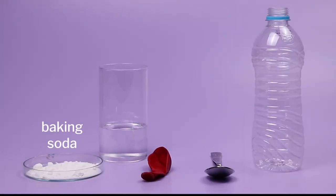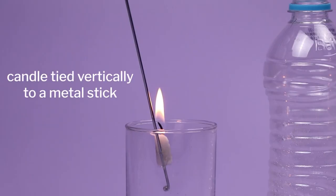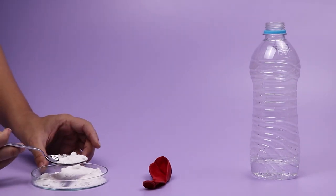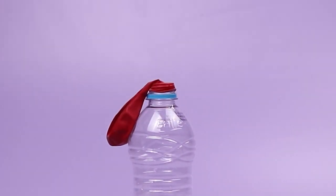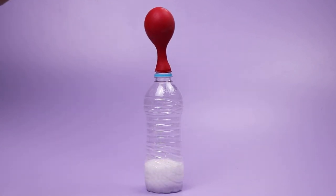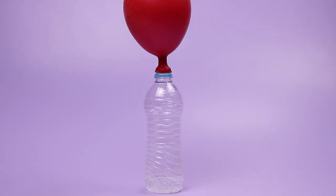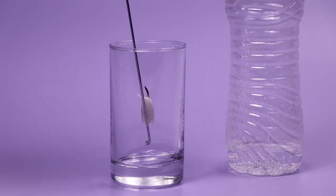For this demonstration, we will need baking soda, vinegar, a bottle, a balloon, and a candle tied vertically to a metal stick. Pour about 30 ml of vinegar into the bottle, then put a spoonful of baking soda inside the balloon. Stretch and fix the balloon to the mouth of the bottle, then invert the balloon so the baking soda falls into the vinegar below. Observe as the balloon inflates; wait till it has inflated fully. Then empty the balloon into a glass, put a lit candle inside the glass, and observe. Conduct this activity in class and ask students to observe the process carefully and note their observations.